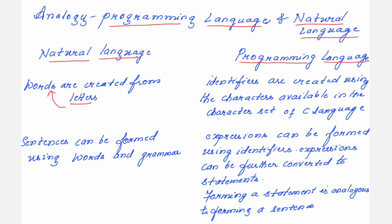Similarly, in C language, just like you have letters, you have a character set. The most fundamental unit in C language is the character set. From this character set you create identifiers. An identifier is simply like a word in natural language. So from the character set of C language you are forming identifiers — letters form words, character set forms identifiers.